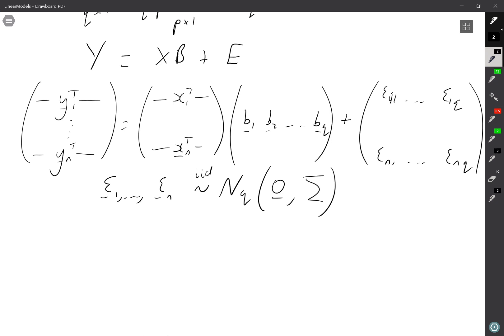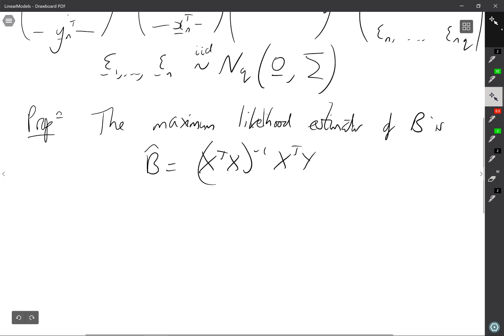Now, it's not difficult to prove this, but we're not going to prove it. The proposition is that the maximum likelihood estimator of B here is B hat, which is (X^T X)^{-1} X^T Y. As I say, this isn't difficult to prove, but we're not going to prove it because it's just a bit messy and it's not particularly informative.